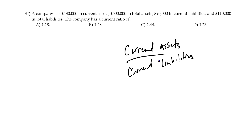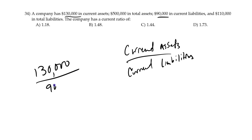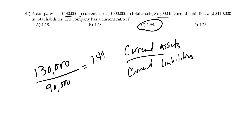In this problem, our current assets are 130 and our current liabilities are 90, so that's about 1.44. The current ratio is 1.44, meaning this company should be able to meet its current obligations as they come due.